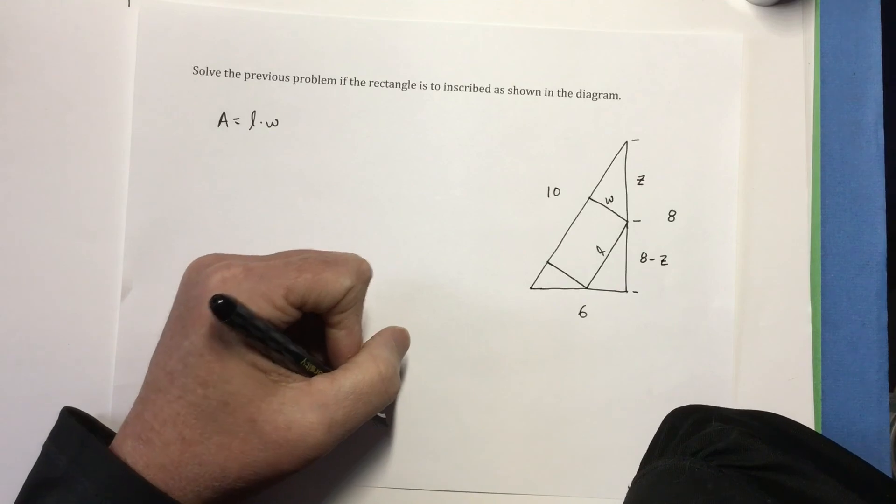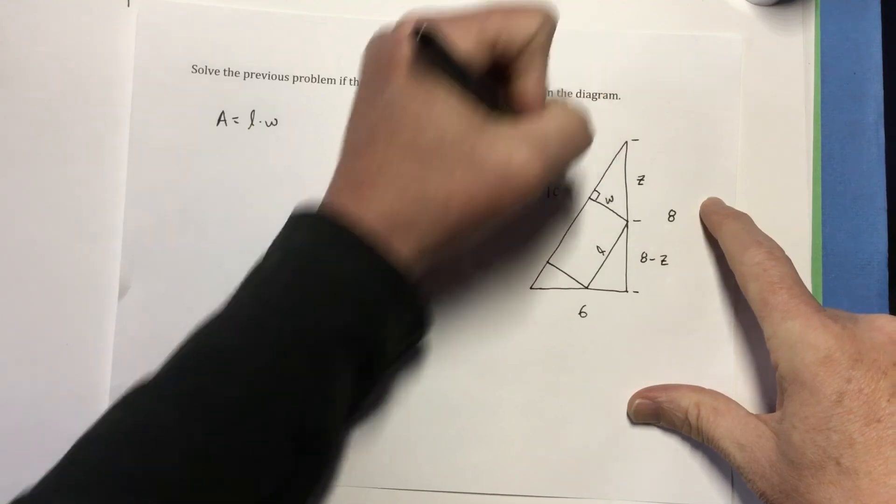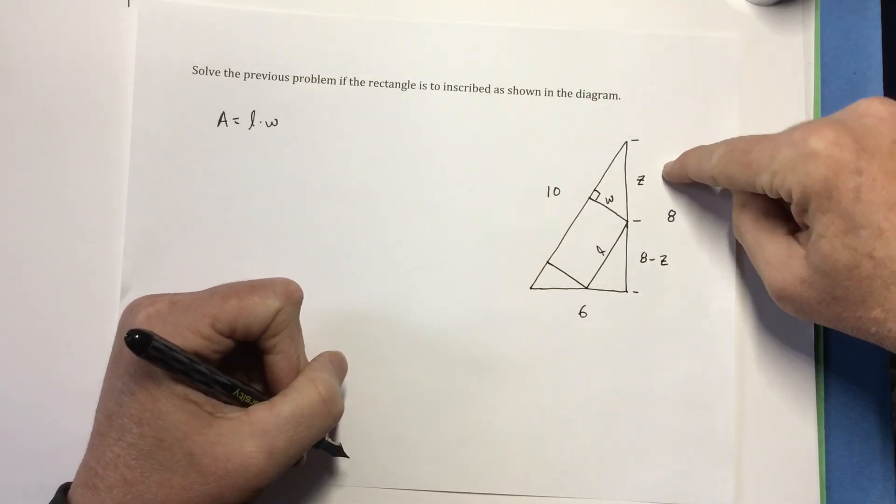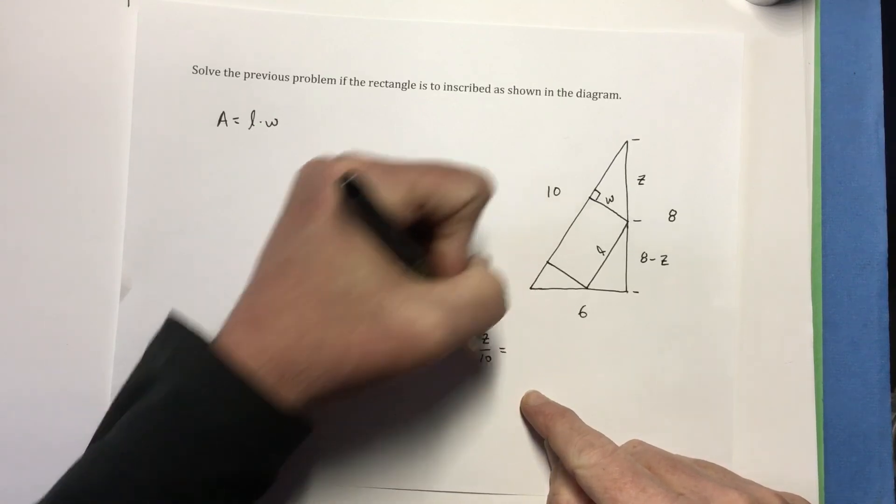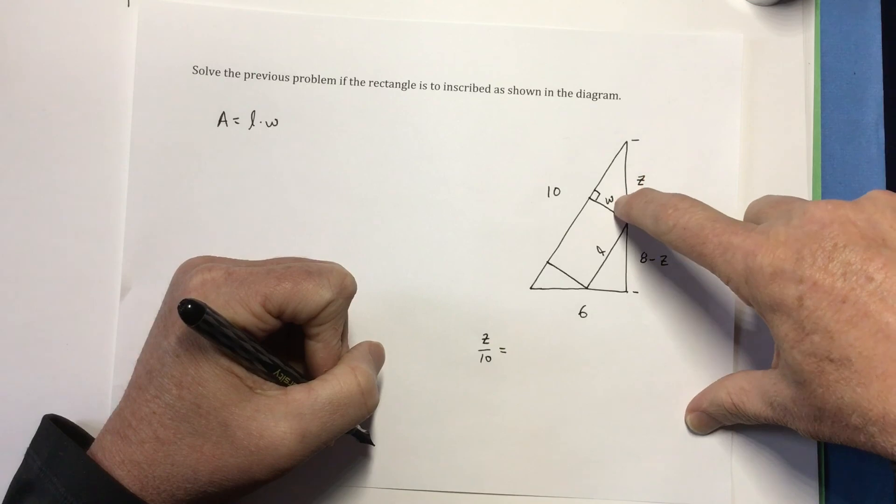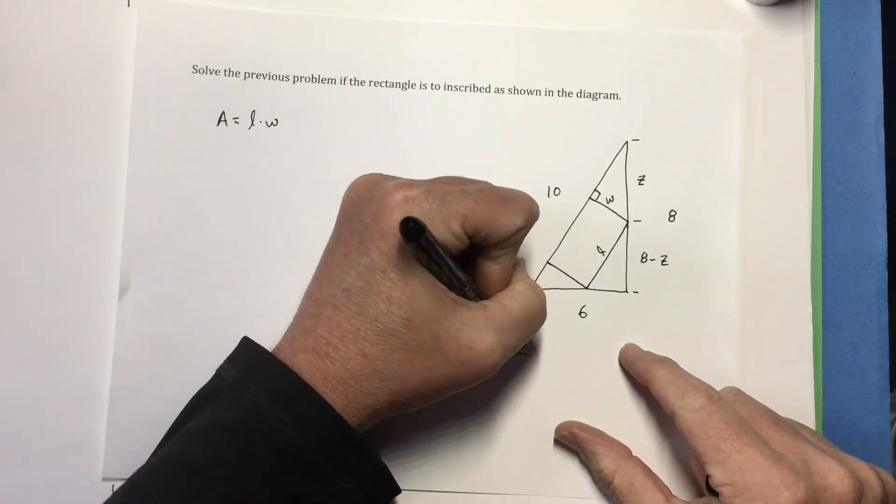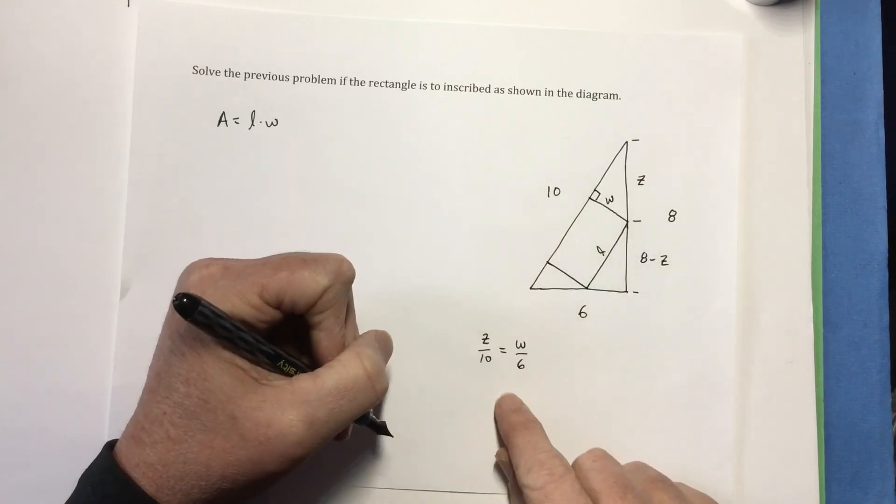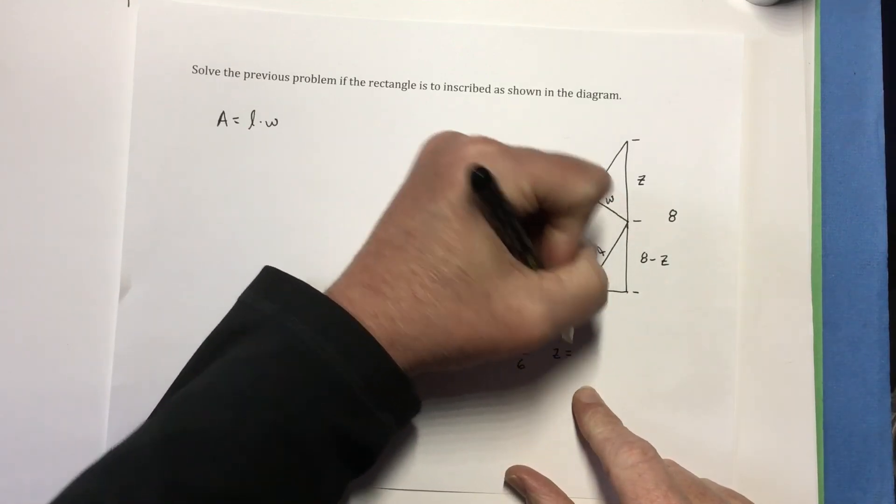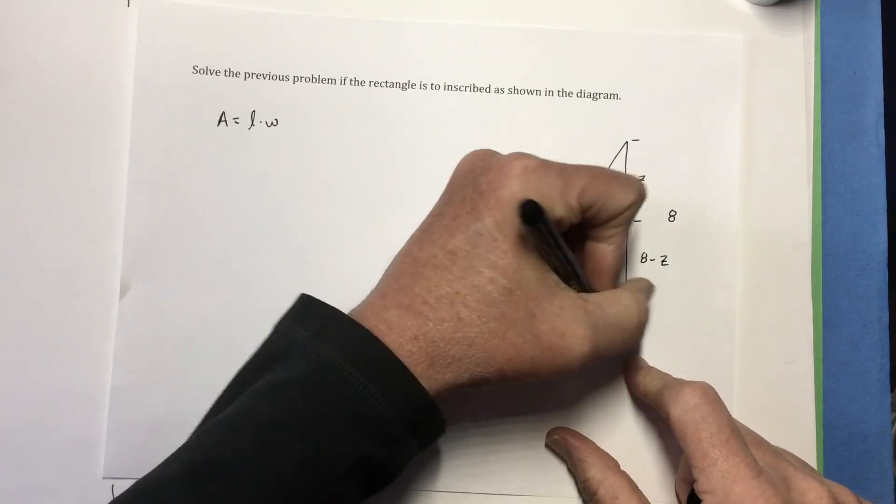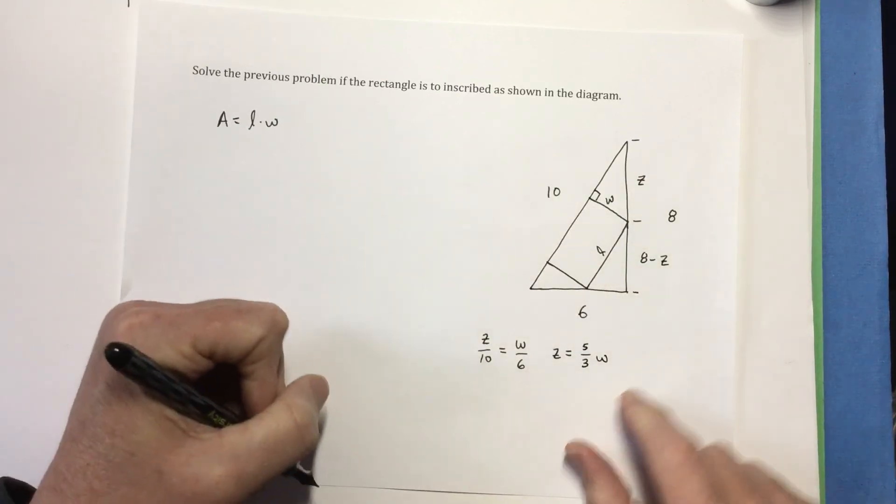So what does that tell me? Well, that means that, remember this is our right angle right here, that Z is to 10 as W is to 6. Which means I can write that as Z equals 10W over 6, which is 5 thirds W.